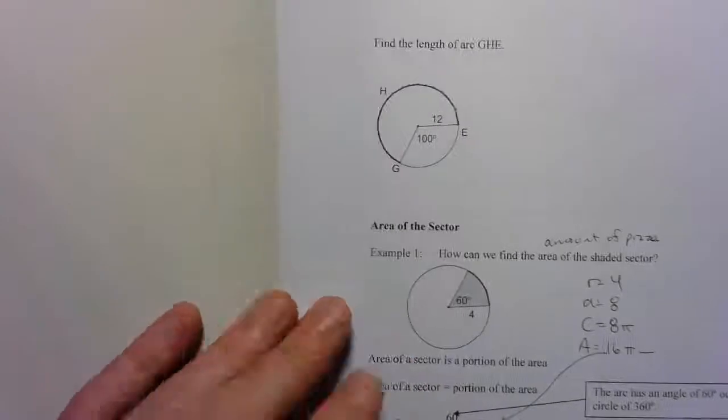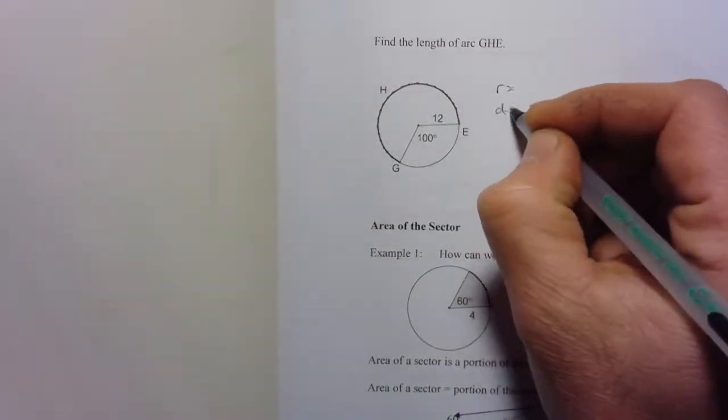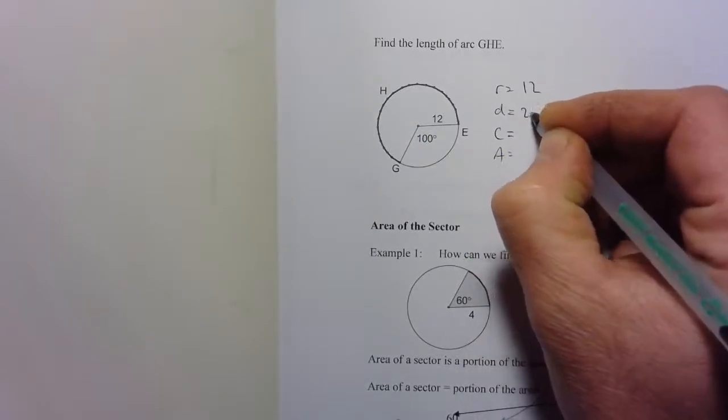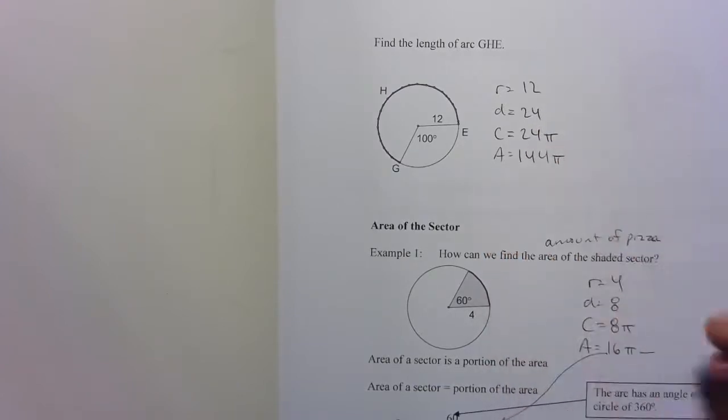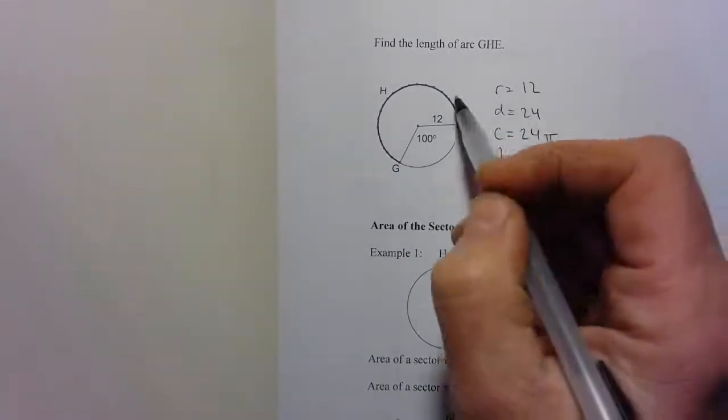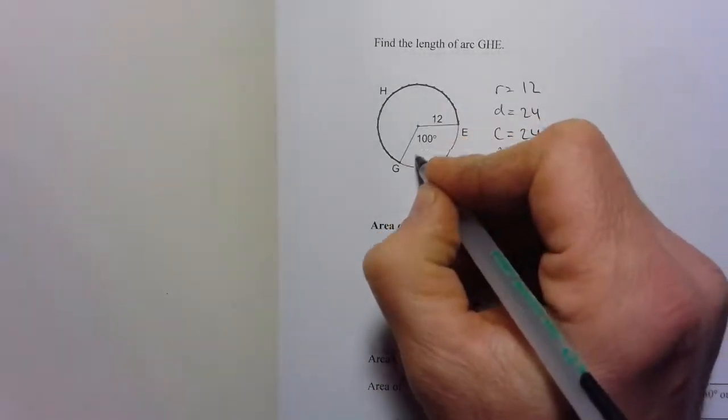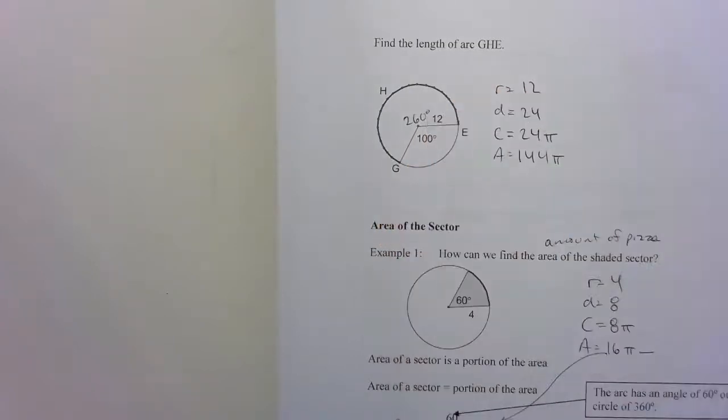If I'm doing this one, the length of the arc GHE. The radius, diameter, circumference, area. If I'm looking at that shaded one, that has, it's not 100, because 100 is this one right here. It's the rest of it, so it's 260. What's left over?